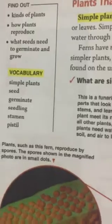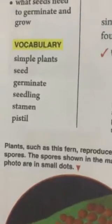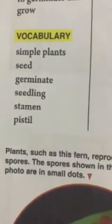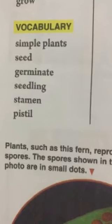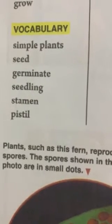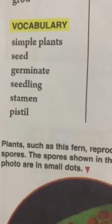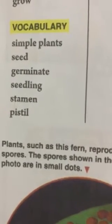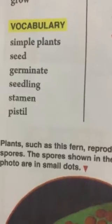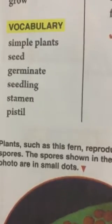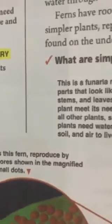See the new vocabularies. We have: simple plant, seed, germinate, seedling, stamen, and pistil.